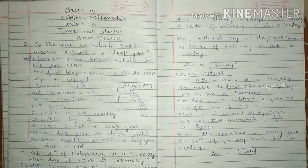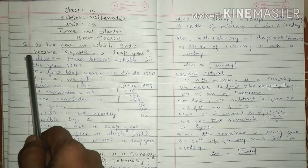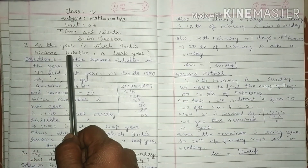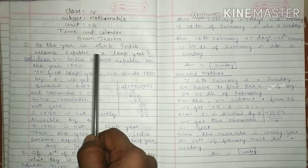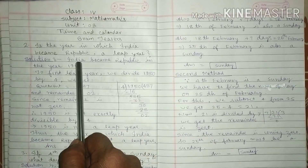My dear students of class 4, I am going to start unit 8, name of unit: Time and Calendar. Brain teachers. Question number 2: Is the year in which India became republic a leap year?